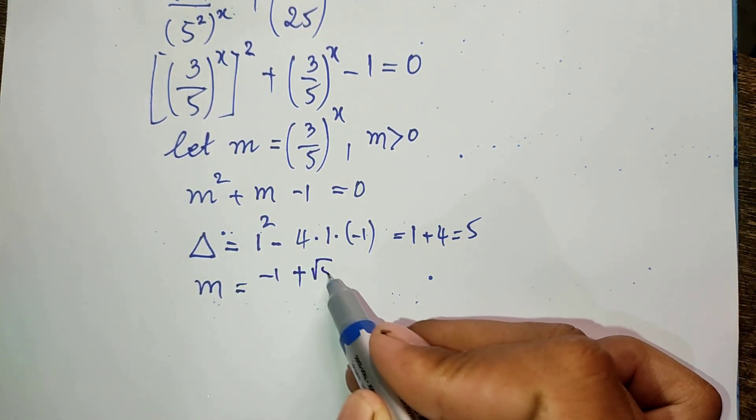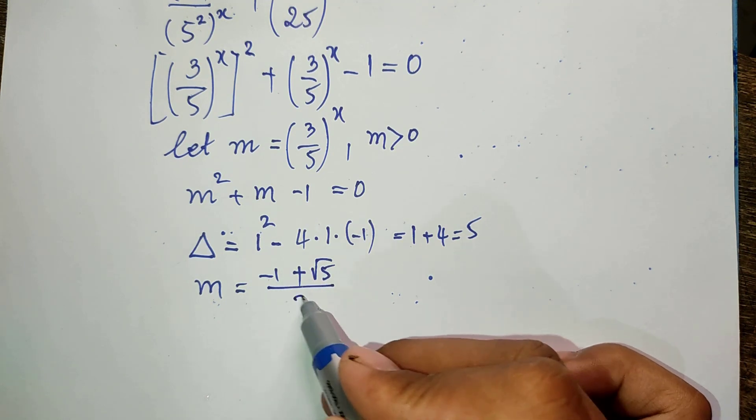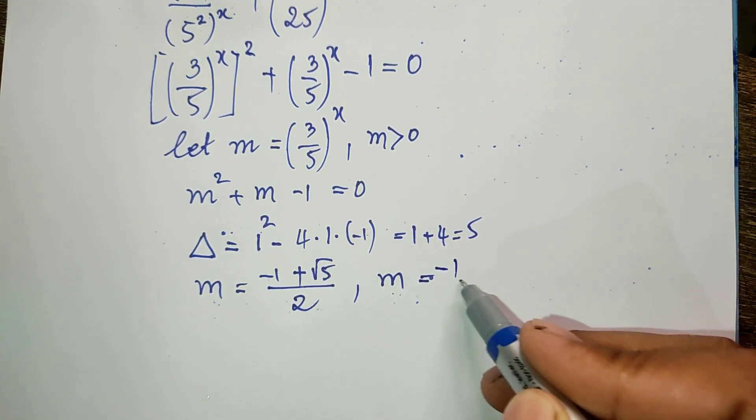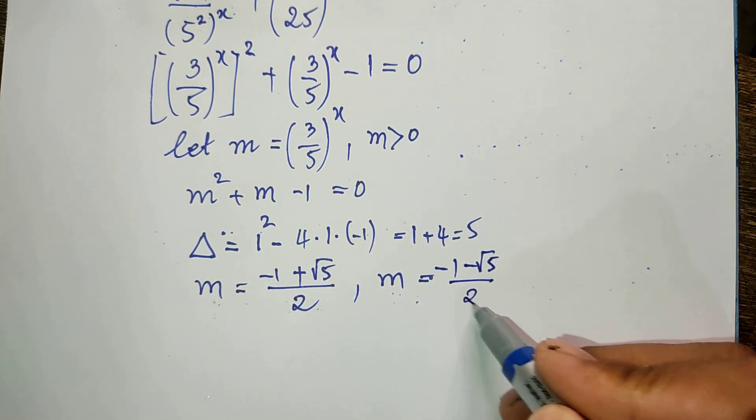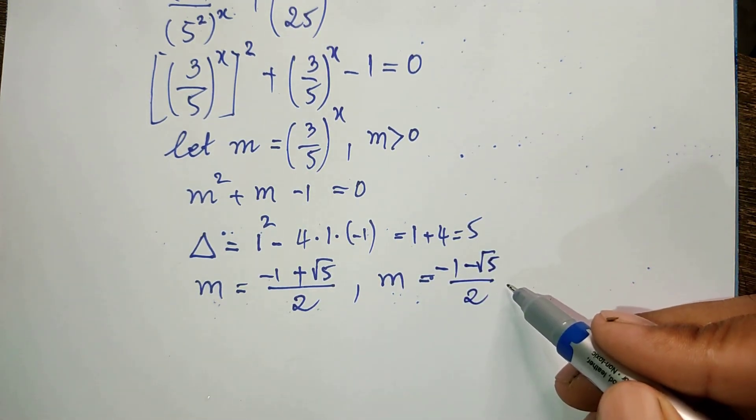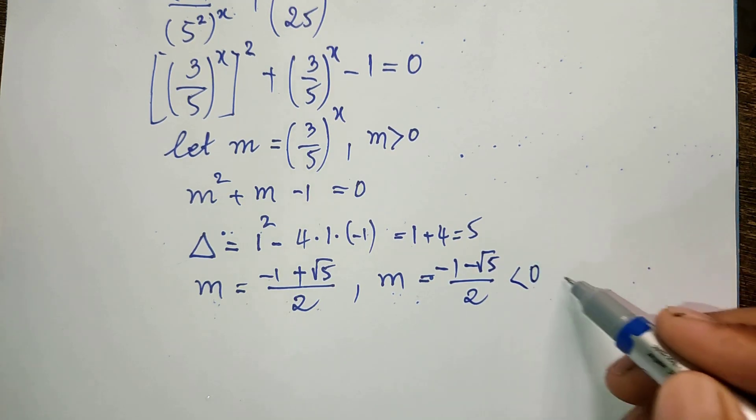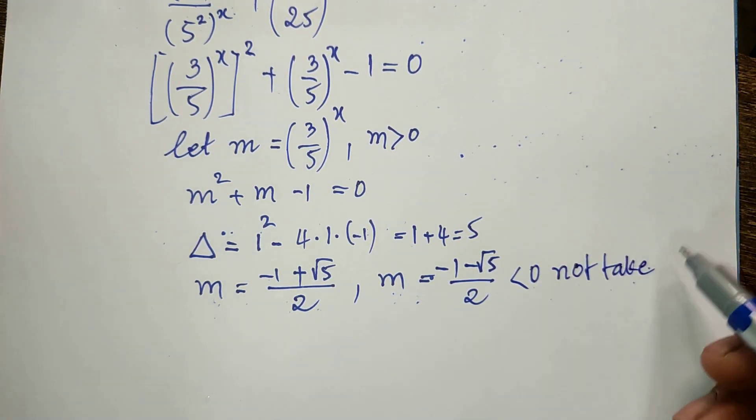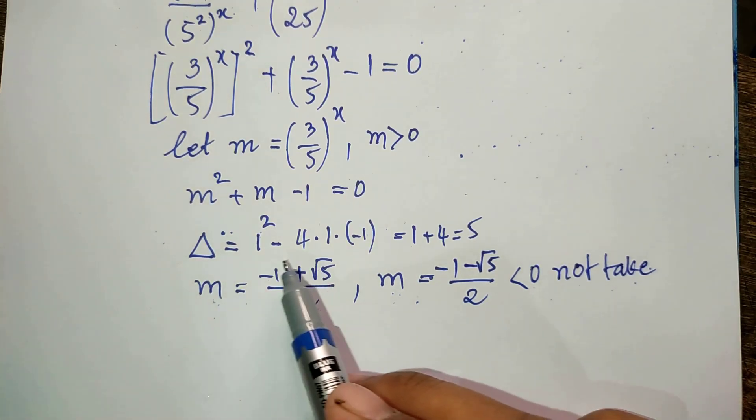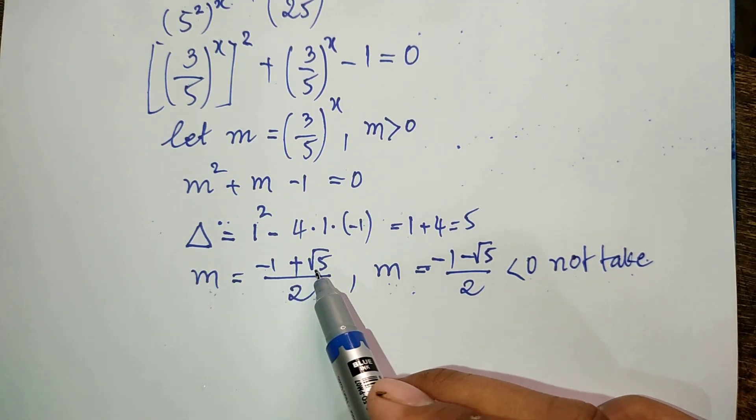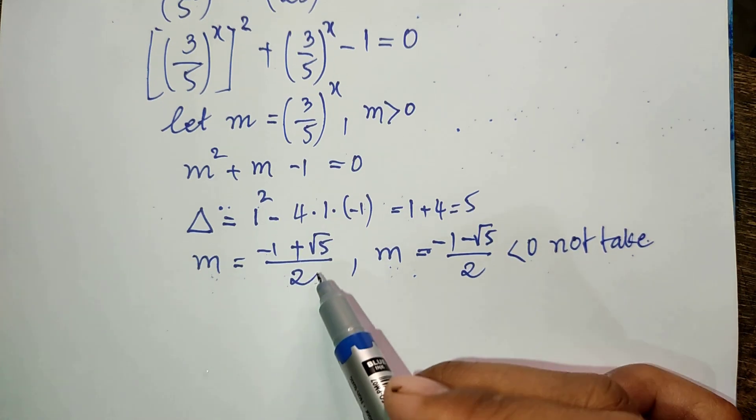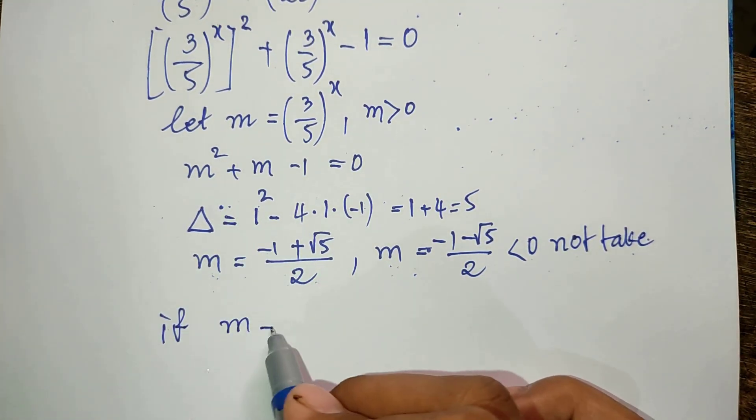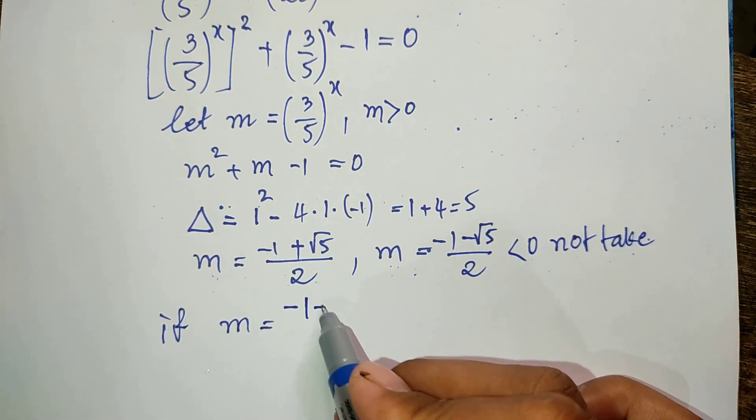So now we get the values of m equal to (-1 + √5)/2 and m equals (-1 - √5)/2. Now this second one is negative, so we do not take it. So we get m = (-1 + √5)/2.